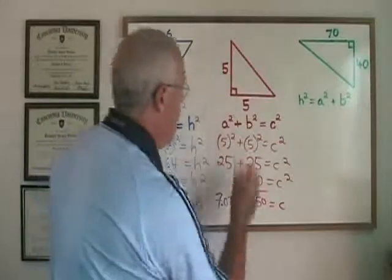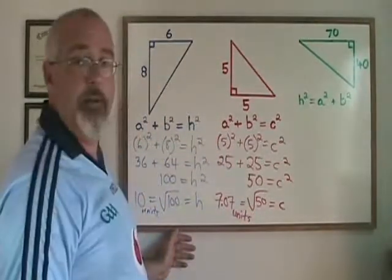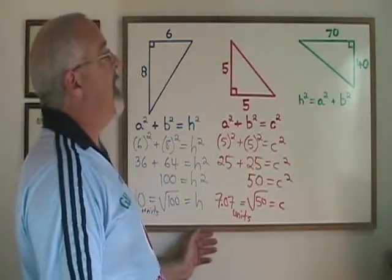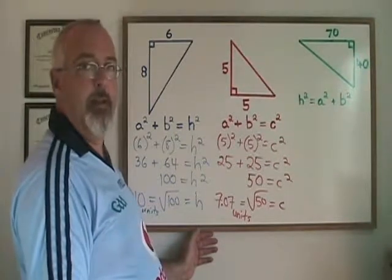Again, no unit of measure was given in the problem, so I will use the word units as my unit of measure. In the third example, the green right triangle, the short side is 40 units in length and the medium length side is 70 units in length.